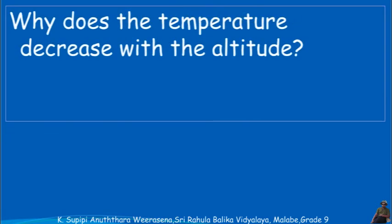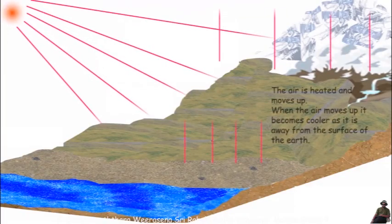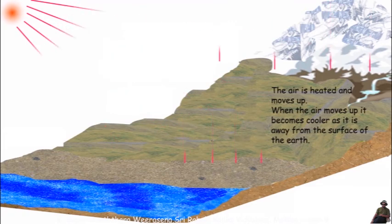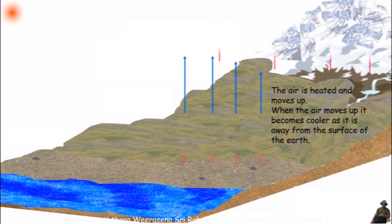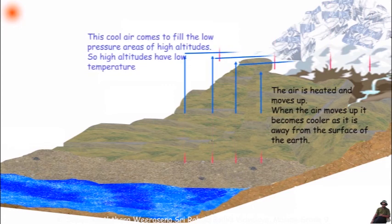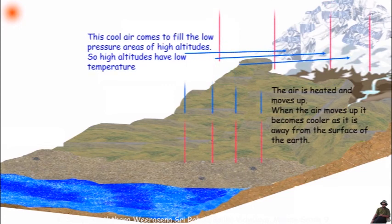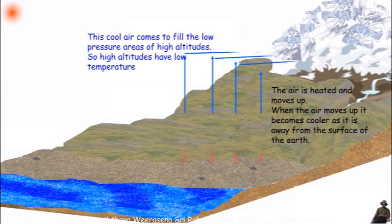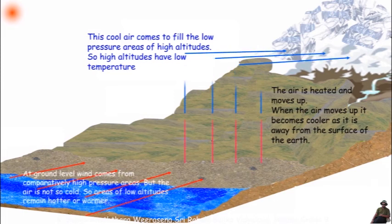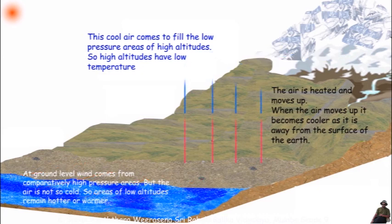Why does the temperature decrease with altitude? The air is heated and moves up. When the air moves up, it becomes cooler as it is away from the surface of the earth. This cold air comes to fill the low pressure areas of high altitudes, so high altitudes have low temperature. At ground level, wind comes from comparatively high pressure areas, but the air is not so cold, so areas of low altitude remain hotter or warmer.